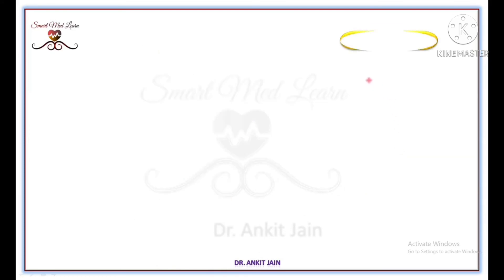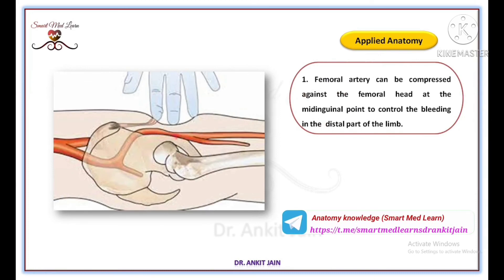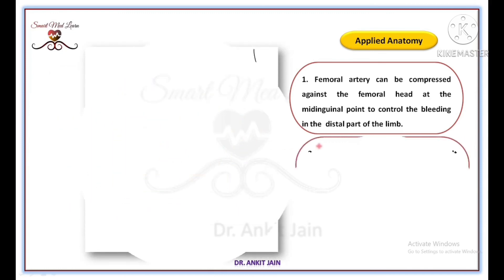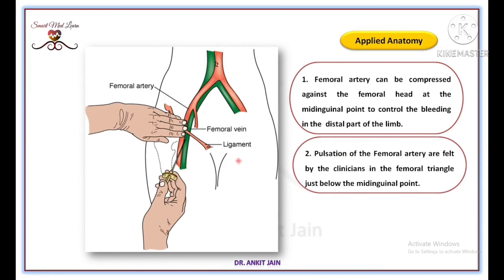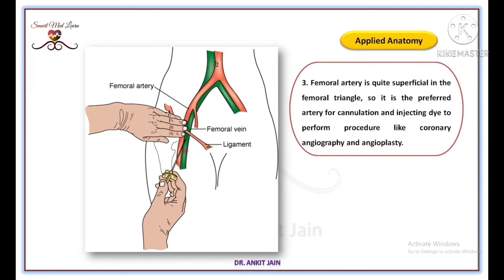Now we discuss the applied anatomy of the femoral triangle. To control heavy bleeding in the distal part of the lower limb, the femoral artery is compressed against the femoral head at the mid inguinal point. Pulsations of the femoral artery are felt by the clinician in the femoral triangle just below the mid inguinal point. The femoral artery is quite superficial in the femoral triangle, so it is the preferred artery for cannulation and injecting dye to perform procedures like coronary angiography and angioplasty.